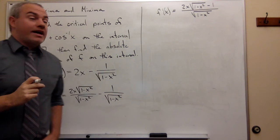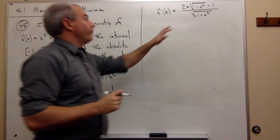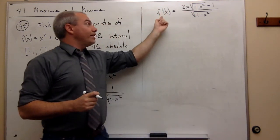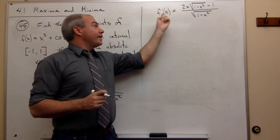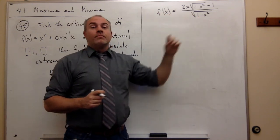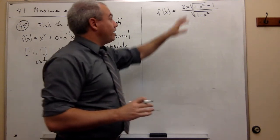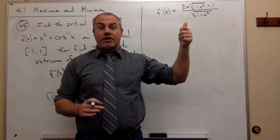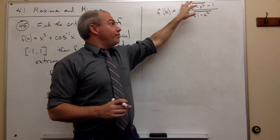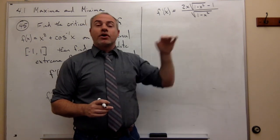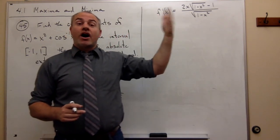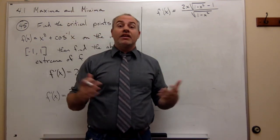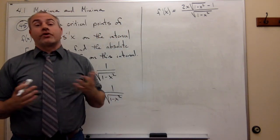Now we're ready to ask: what are the critical values? There are two things that could happen. Either the derivative equals zero, or it's undefined. Once it's in one fraction, for a fraction to be zero the numerator has to be zero; for a fraction to be undefined the denominator has to be zero. So I'm asking: where is the numerator equal to zero, or where is the denominator equal to zero? Either gives a critical value.